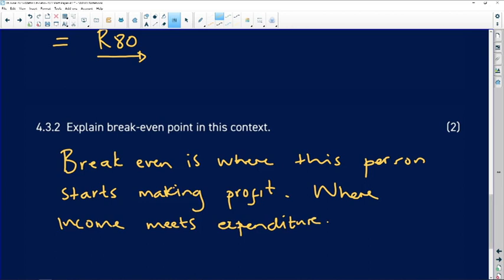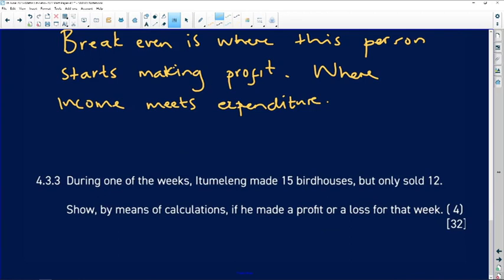During one of the weeks, Itumeleng made 15 birdhouses but only sold 12. Show by means of calculations if he made a profit or a loss for that particular week. In order for us to calculate this, it's important to look at how much income this person made. Let's go see using the graph. For 15 birdhouses...